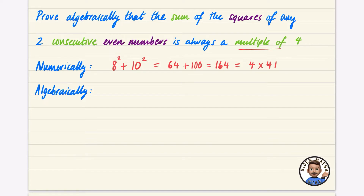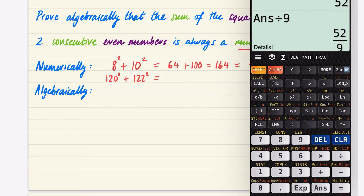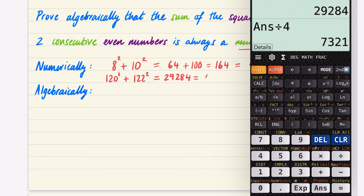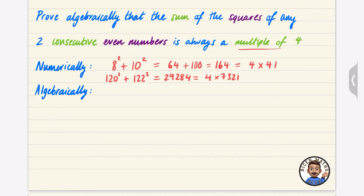This should work with any consecutive even numbers. Using 120 squared plus 122 squared on the calculator gives 29,284, and dividing by 4 gives the whole number 7,321 — so it equals 4 times 7,321. But this doesn't prove anything because we've only shown it with two examples; we need to show it works for any consecutive even numbers using algebra.